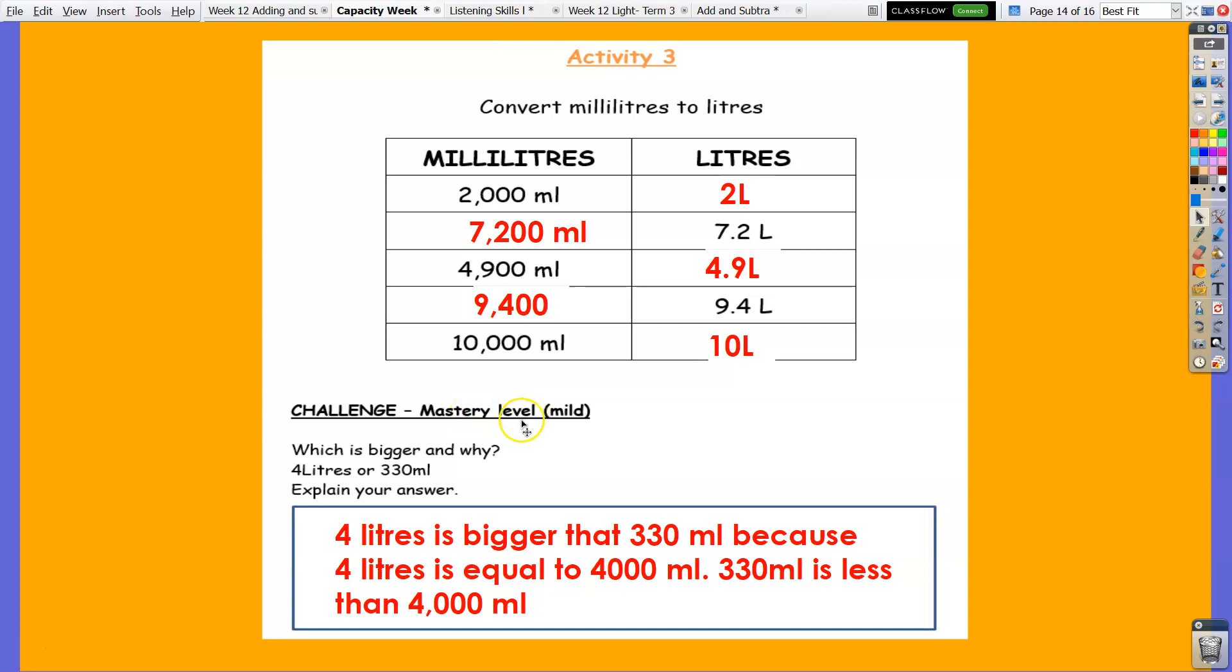For the challenge question, which is bigger and why, 4 liters or 330 ml? Explain your answer. So 4 liters is bigger than 330 ml because 4 liters is equal to 4000 ml. Therefore, 330 ml is less than 4000 ml.